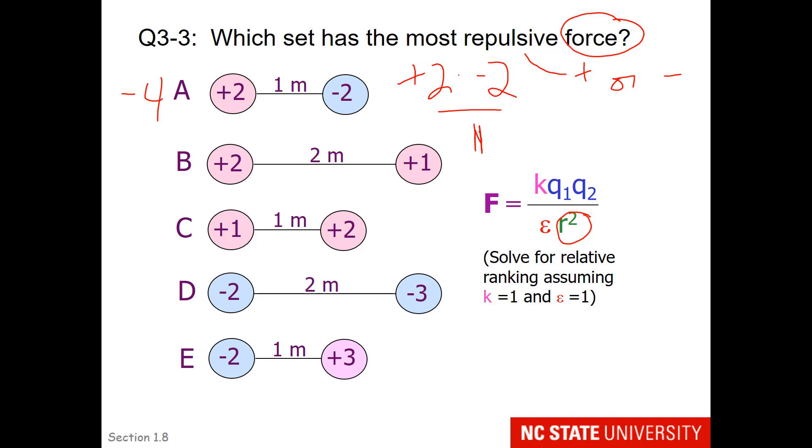But B would change. It would be a plus 2 multiplied by plus 1 divided by 2 squared. So that's going to change your value from 1 in the previous question to 1 half with a positive sign. So please finish the rest of those calculations and you should be able to figure out the relative ranking of these and which one has the most repulsive force.